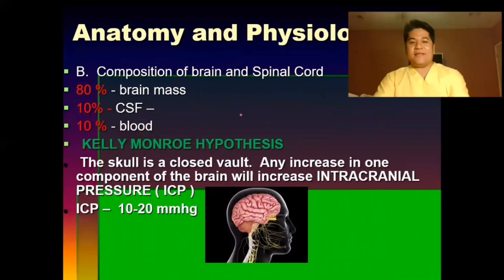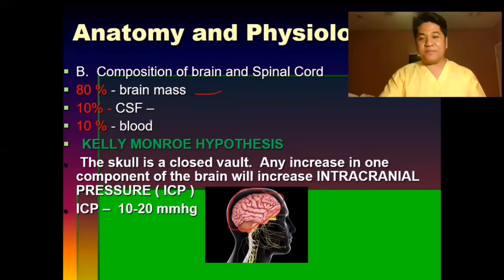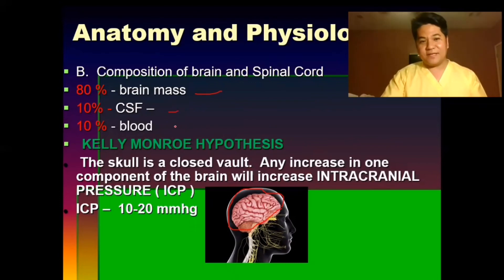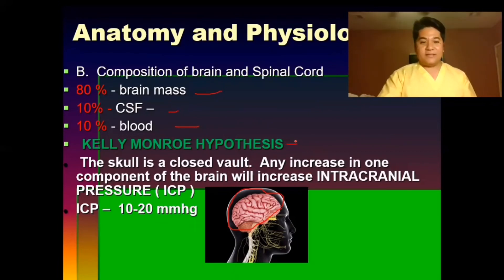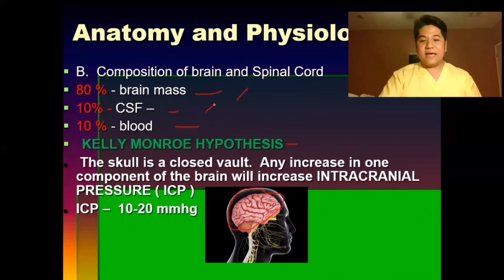Let's talk about the brain and spinal cord, or the central nervous system. The central nervous system has 80% of its composition from brain mass, 10% from cerebrospinal fluid (CSF), and the other 10% from blood supply and blood nutrients. The Monro-Kellie hypothesis states that the skull is a closed ball — the brain is enclosed in the skull, which houses and protects it. Any increase in brain mass, CSF, or blood would lead to increased intracranial pressure (ICP), which is normally 10 to 20.